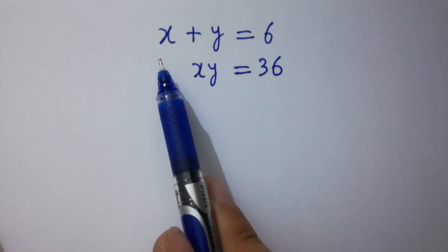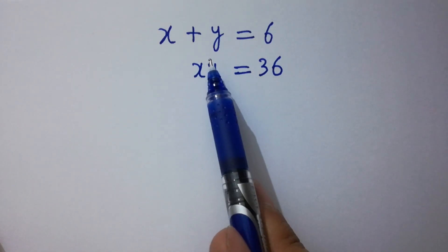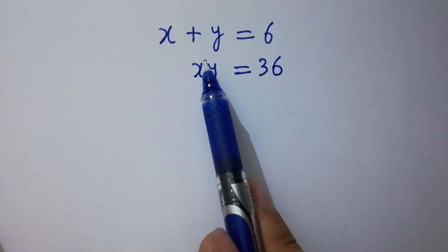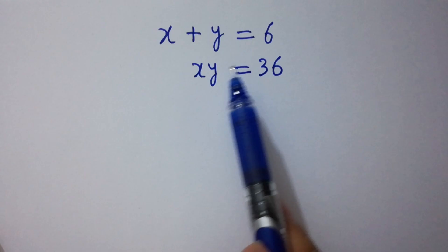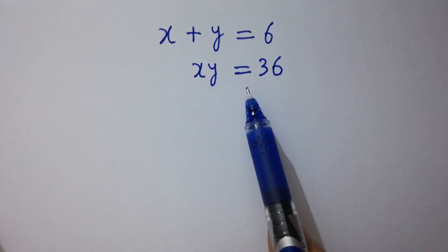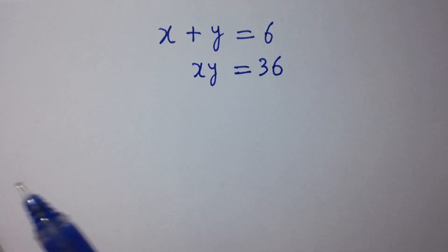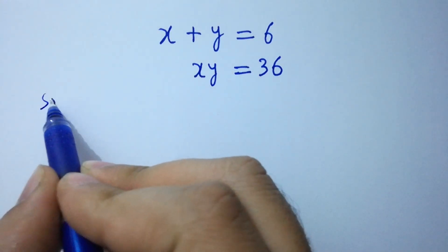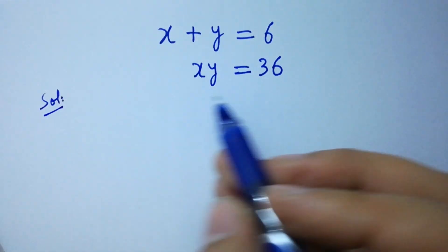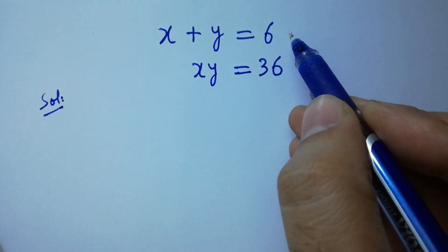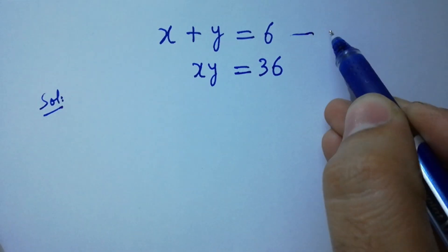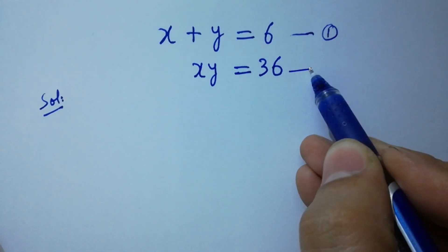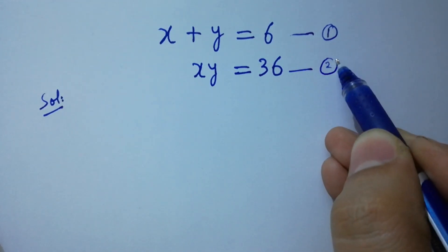How to solve for x and y in this problem, where x plus y equals 6 and x times y equals 36. Let's have a solution. To solve this, let x plus y equal to 6 be the first equation and x times y equal to 36 be the second equation.